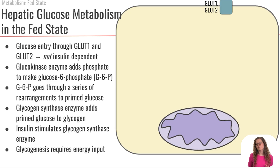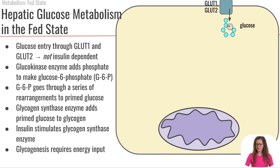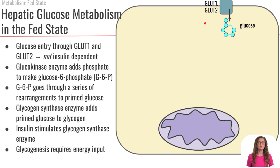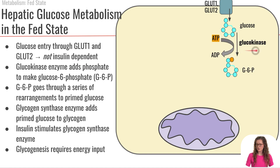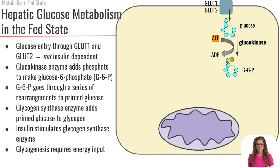Let's take a closer look at what is going on in the liver during the fed state. Glucose is going to enter the liver cell through either GLUT1 or GLUT2 — there's some redundancy there. Importantly, neither of these glucose transporters are insulin dependent; they're always going to be there. Once glucose has entered, glucokinase adds a phosphate to the glucose, so now that glucose is trapped inside the cell in its glucose-6-phosphate form.